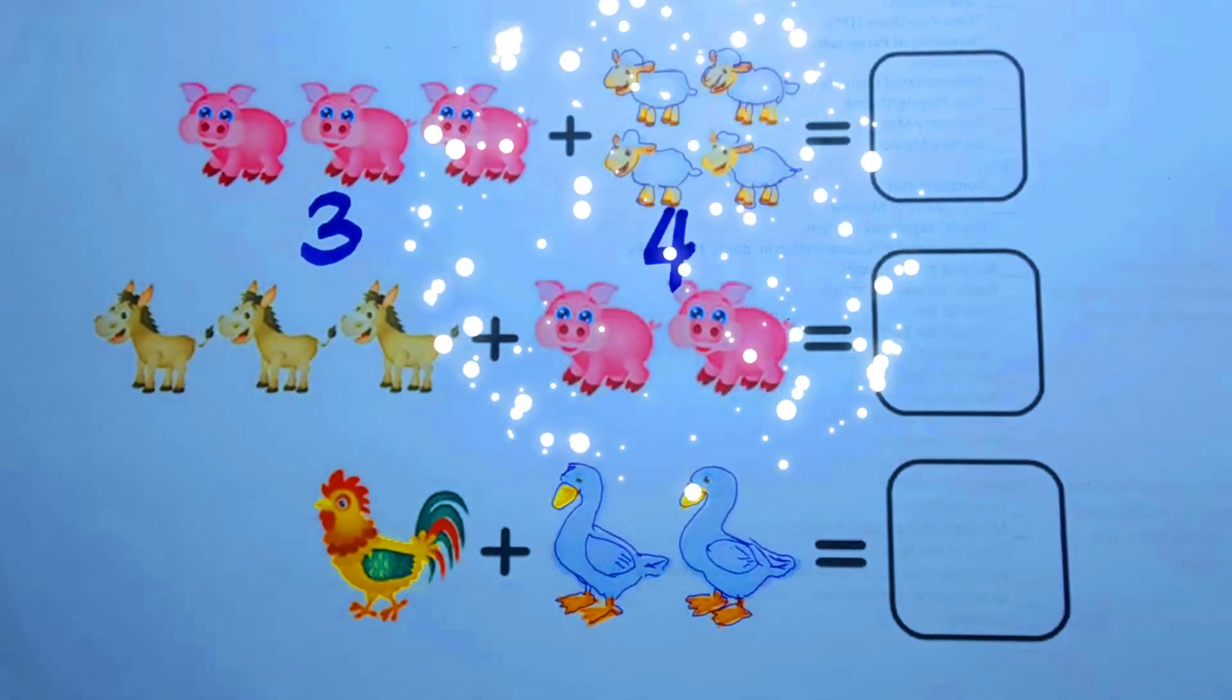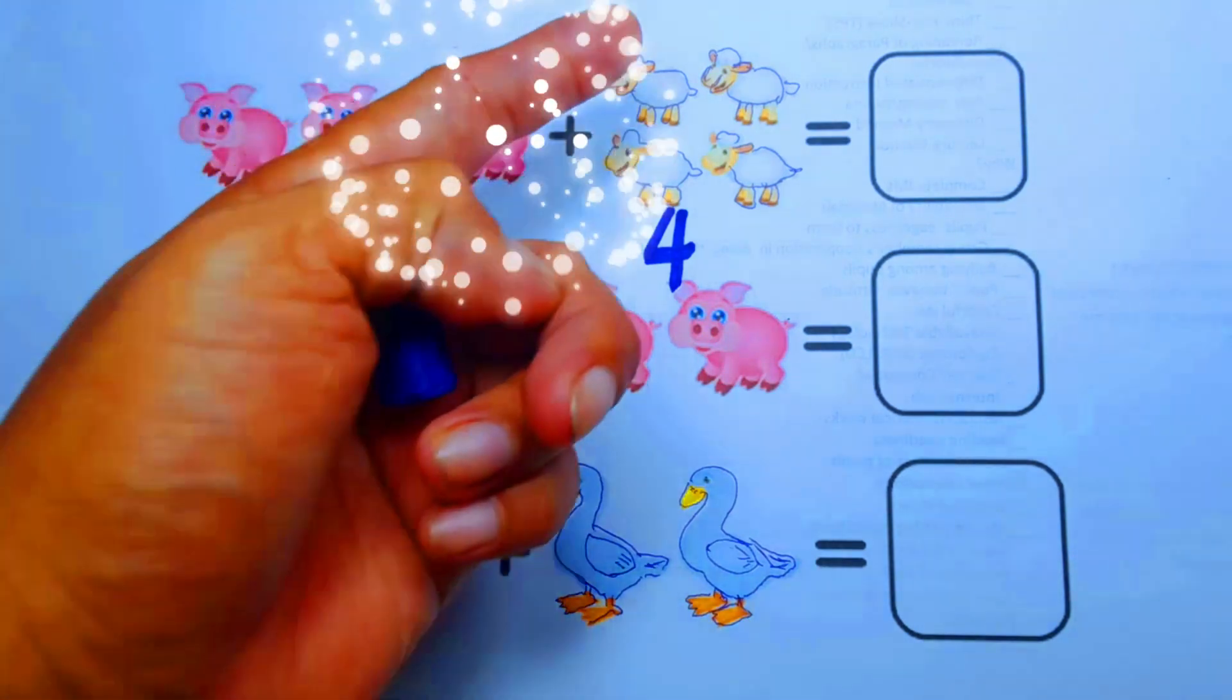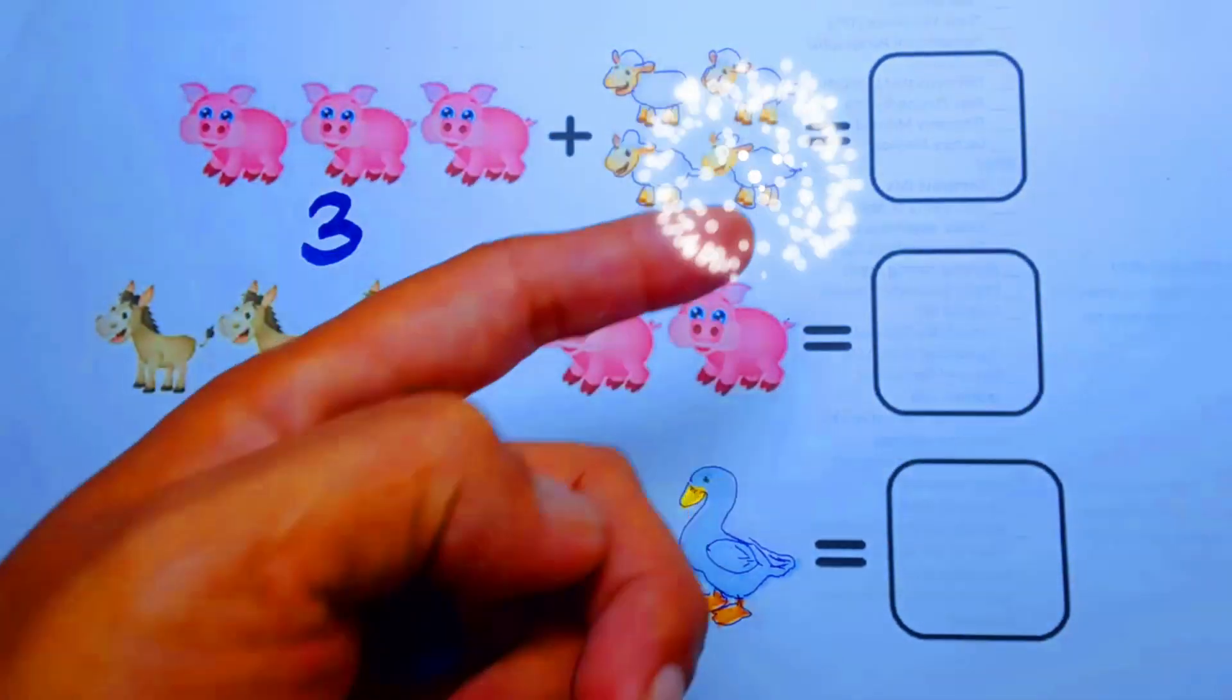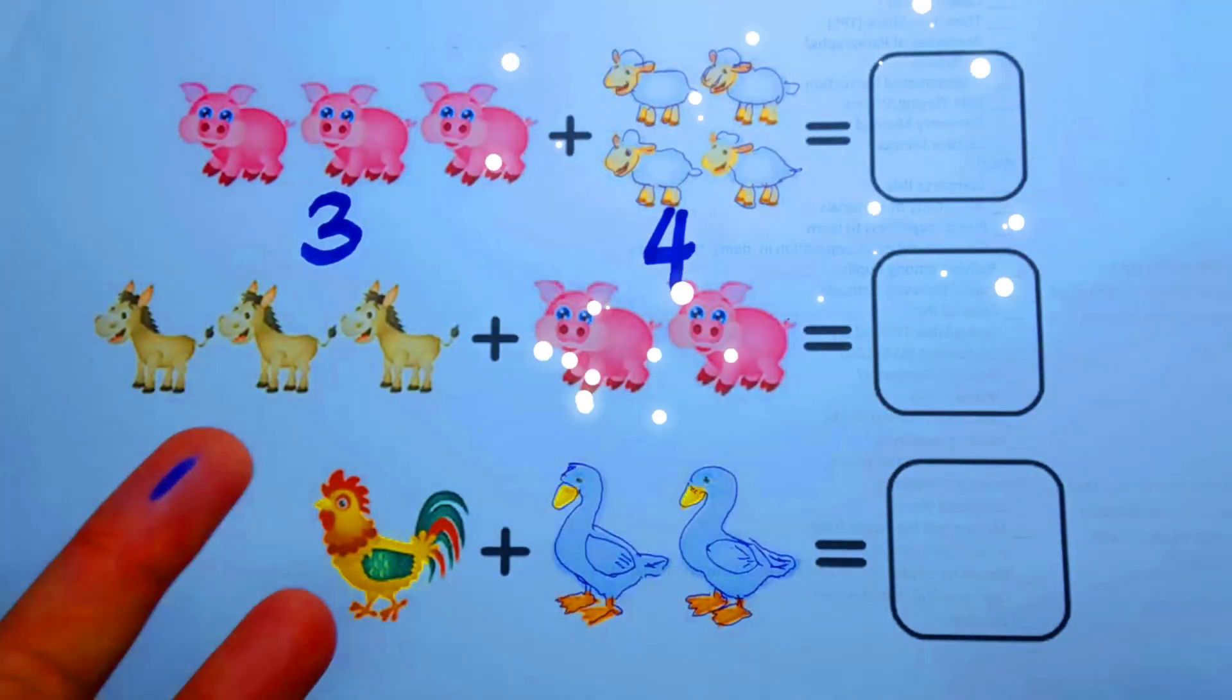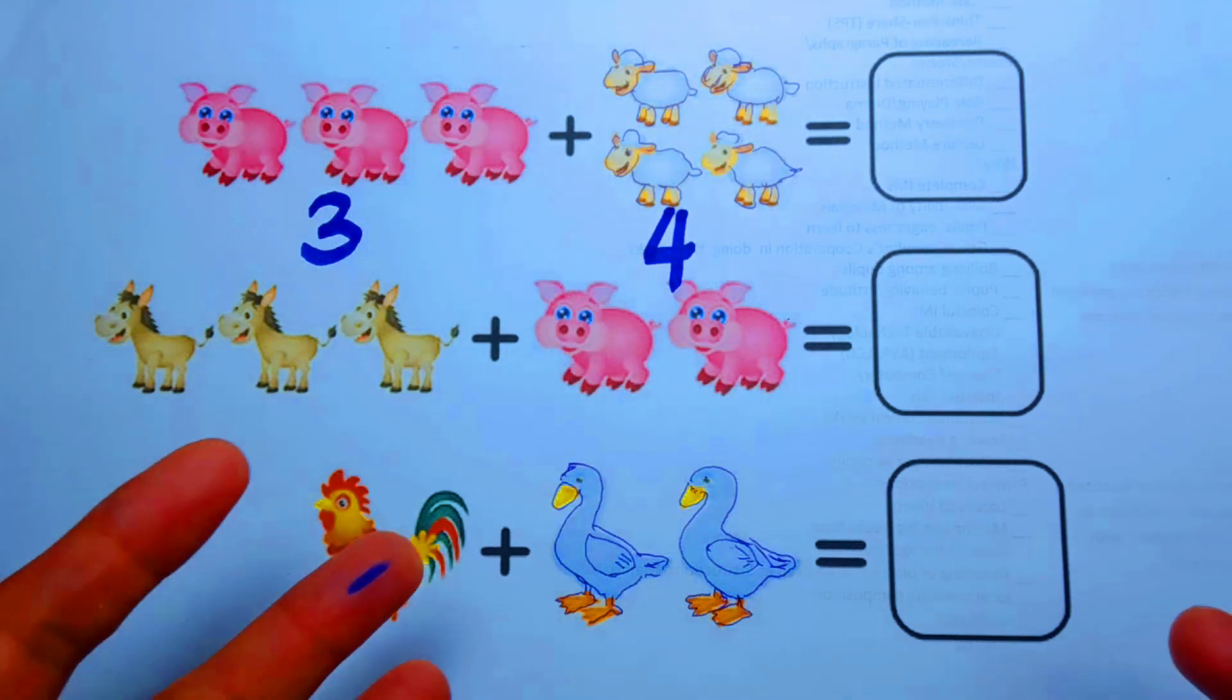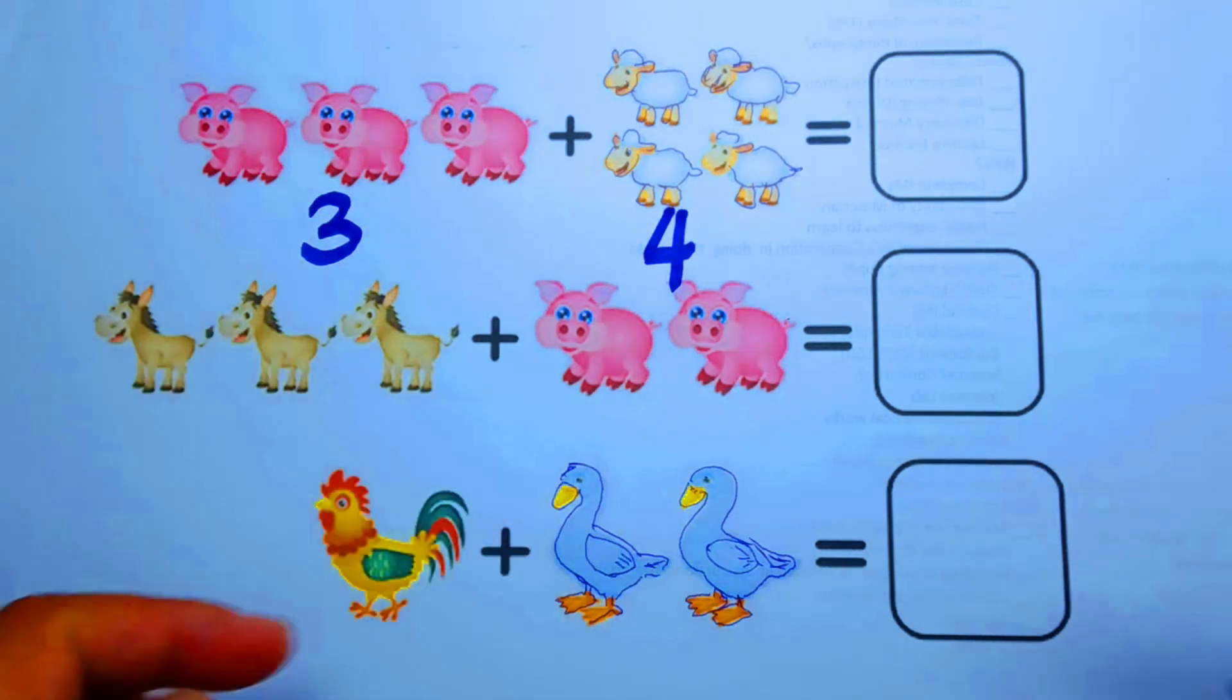Let's add and combine them all. One, two, three, four, five, six, seven. It means that three plus four equals seven. Great! Seven is like this.